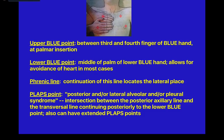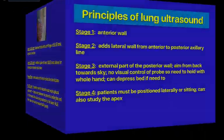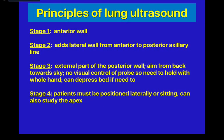There is an upper blue point between the third and fourth finger of the blue hand, a lower blue point at the middle of your palm, and a phrenic line that is the continuation of this line locating the lateral space. There is also a PLAPS point — posterior and/or lateral alveolar and/or pleural syndrome — which is the intersection between the posterior axillary line and a transverse line continuing posteriorly to the lower blue point. Essentially, this is accessed as if you lift the patient up.